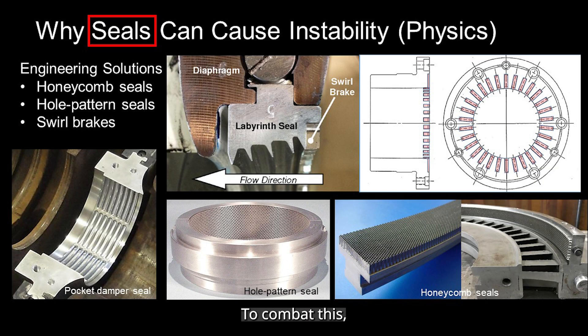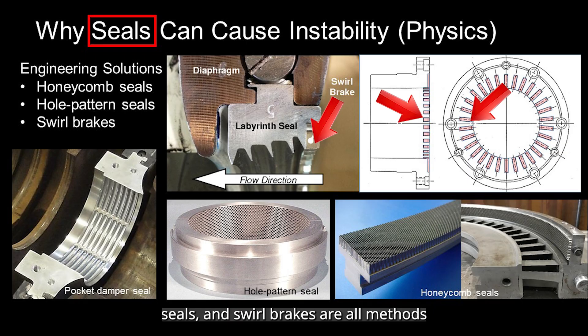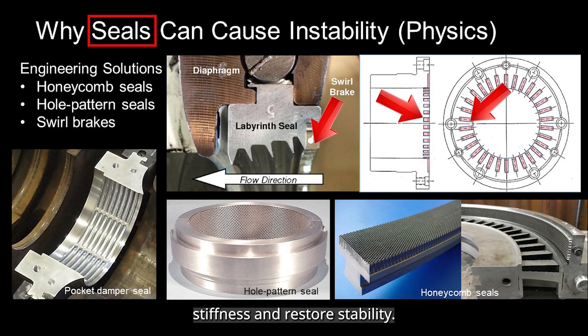To combat this, machines use advanced seal designs. Honeycomb seals, hole pattern seals, and swirl brakes are all methods to reduce cross-coupled stiffness and restore stability.